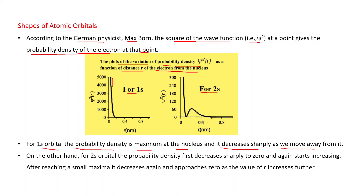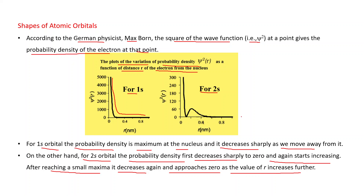For the 2s orbital, the probability density first decreases sharply to 0, then starts increasing again. After reaching a small maximum, it decreases again and approaches 0 as r increases further. So it first decreases to 0, shows a small increase, and then decreases again.